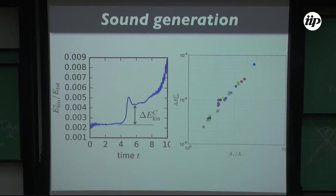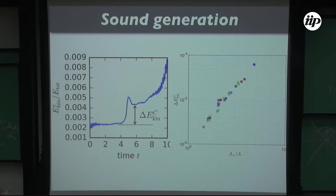You can measure how much energy was transferred from vortices to sound by measuring Δ(compressible energy) at a short time after reconnection, corresponding roughly to the linear regime time. When this Δ is plotted against a⁺ or a⁻, the values appear well correlated.